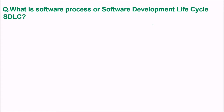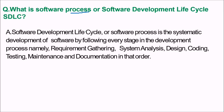What is software process, or SDLC — software development lifecycle? SDLC is the systematic development of software by adopting every stage in the development process: starting with feasibility, then requirement gathering, followed by system analysis, then design, then coding, then testing, then maintenance, and also documentation — all in order.